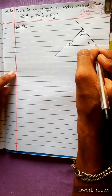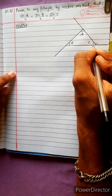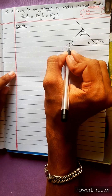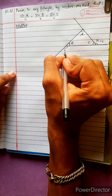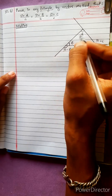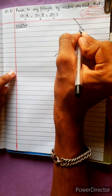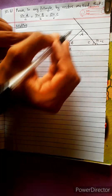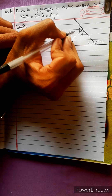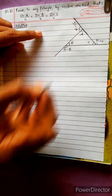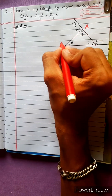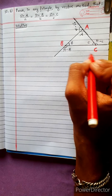This is a linear pair. This is a straight line. This is a straight line. Please show this angle. This is point B and this is point C.